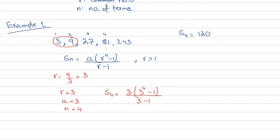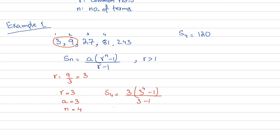This should give us the sum of the first 4 terms, which equals 120. Working it out: 3 to the power 4 is 81, minus 1 gives 80. The denominator is 3 minus 1 equals 2. So we have 3 times 80 over 2, which is 3 times 40, which equals 120. The formula is verified — it gives us the correct sum.